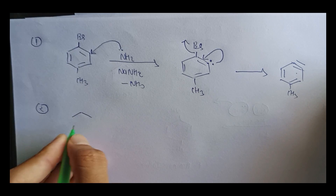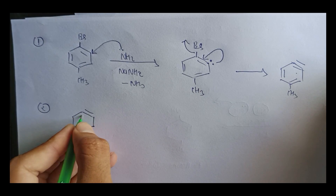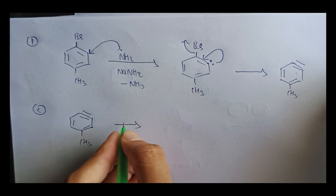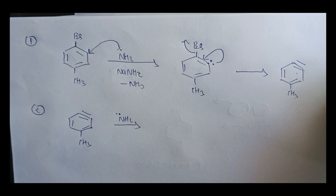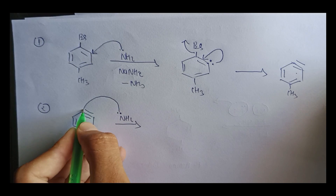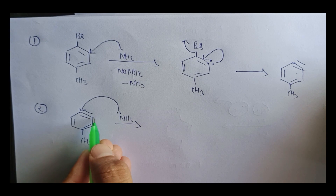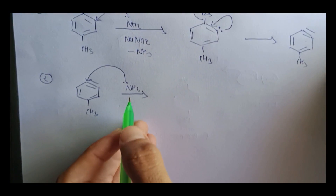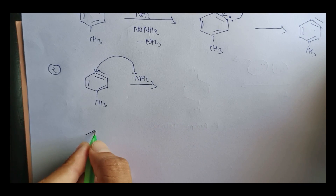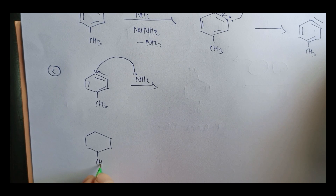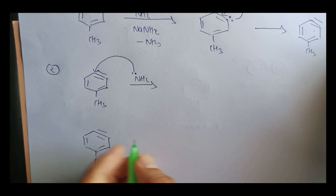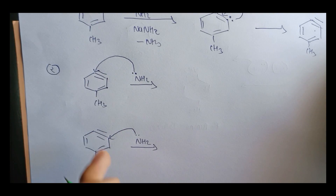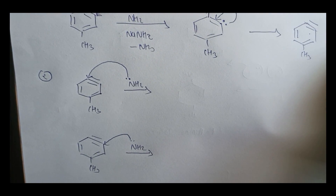In the second step, the Addition step: after the bromine group is eliminated, the Benzyne intermediate has a CH3 group and a triple bond. The adding group is NH2⁻, which has an extra electron pair. NH2⁻ can participate at two different carbons of the triple bond — there are two possibilities. First possibility: NH2 participates at one carbon of the triple bond.